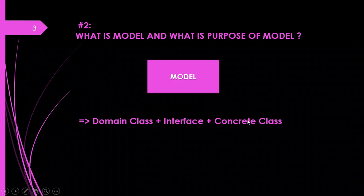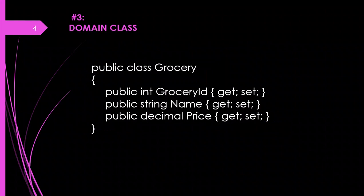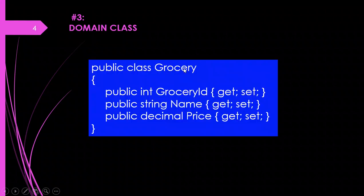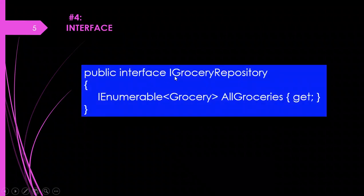Before understanding interface and concrete class, let's look at the purpose of the model. The purpose of the model is to hide the details about how we manage or interact with the actual data. Just the domain class will not make up the model — we also need to provide classes that will perform actual data persistence. This can be done by creating a repository interface which has methods and operations we can perform using this domain class.